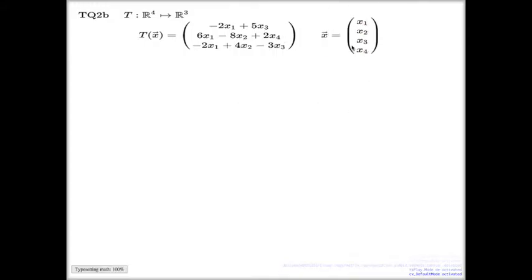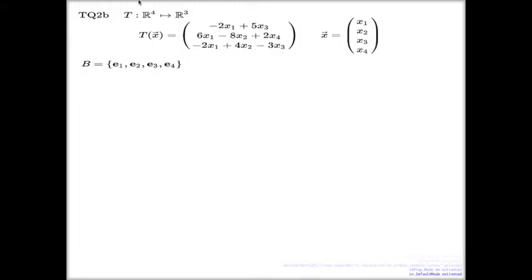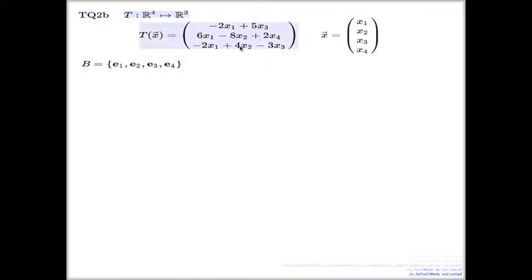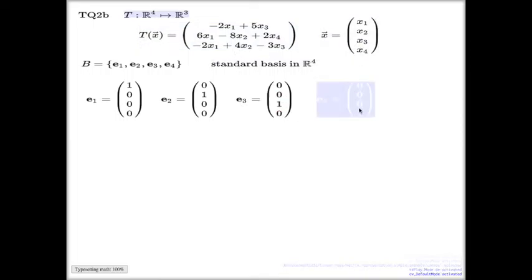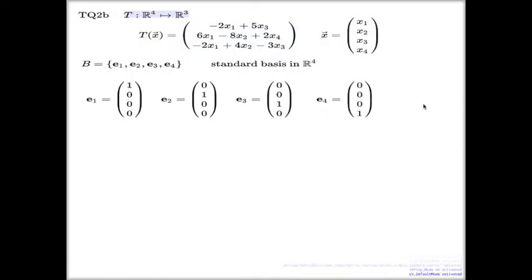The map acts on quadruples. I take the standard basis in the domain, R^4. In such a basis we will have four elements: E1, E2, E3, E4. Each of these E vectors is a quadruple filled with zeros except for one place — depending on the index, the first, second, third, or fourth place — where you have a one. I spelled them all out here: all four vectors E1, E2, E3, E4.